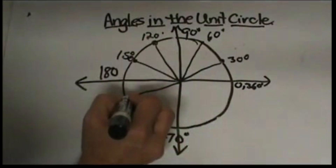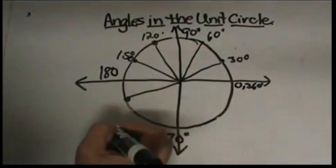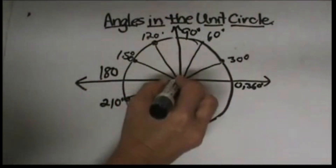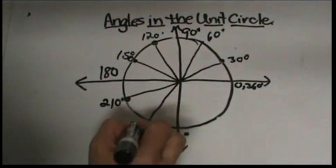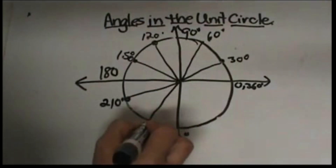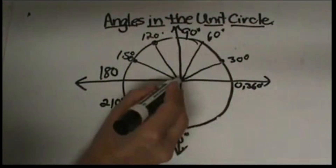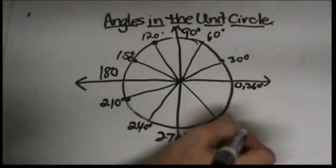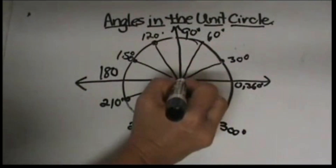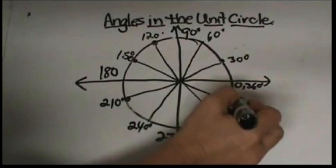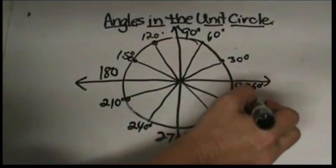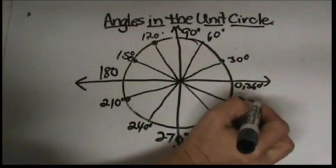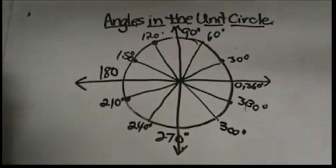You can see we're increasing in 30-degree increments. So we have 210, 240, 270, 300, 330, and 360. So there is our 30-degree family.